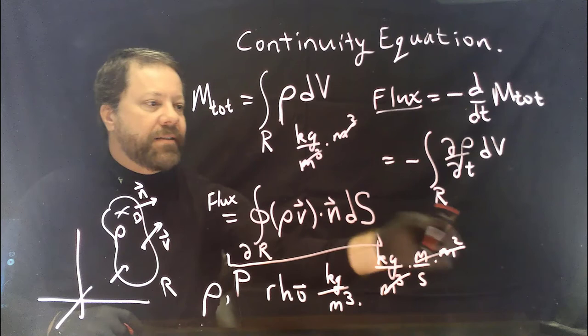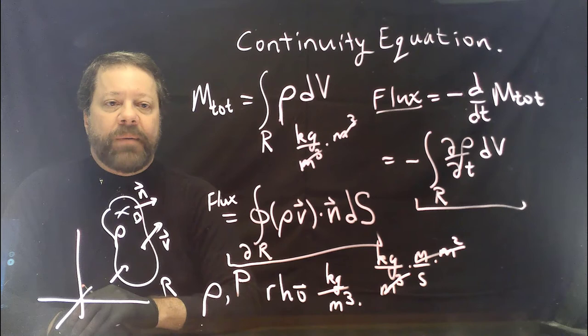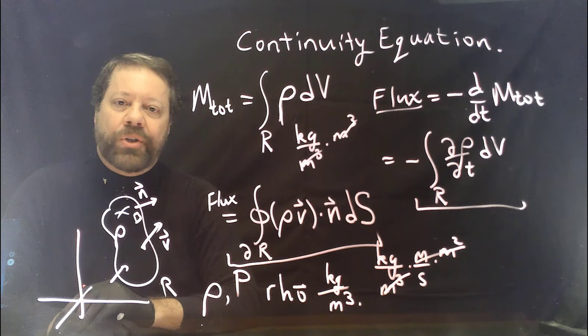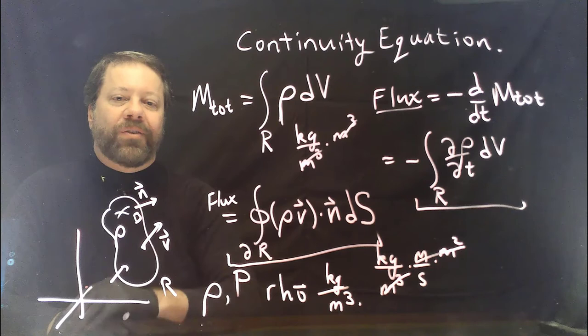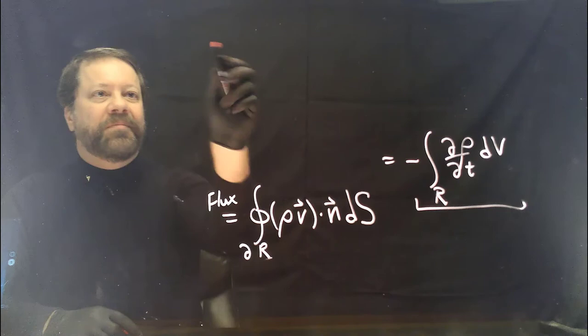Checking units: density is kg/m³, velocity is m/s, the unit normal is dimensionless, and the surface element is m², giving kg/s — the rate at which mass is pumped across the boundary. We have two representations for the flux and set them equal, implying mass is not created or destroyed within the region and can only change by flowing across the boundary. Now I'll convert the surface integral to a volume integral using the divergence theorem.